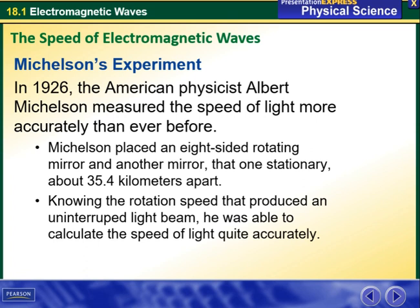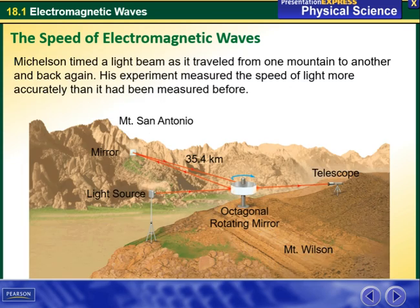he was able to calculate the speed of light quite accurately. Michelson timed a light beam as it traveled from one mountain to another and back again. His experiment measured the speed of light more accurately than it had been measured before.